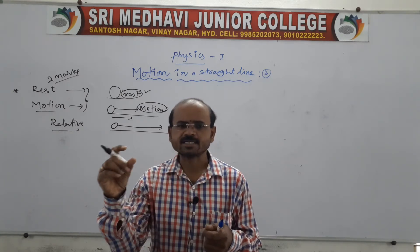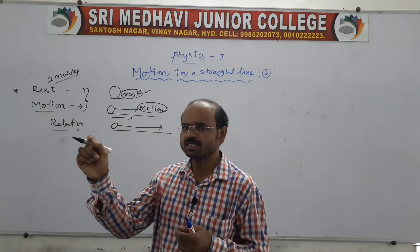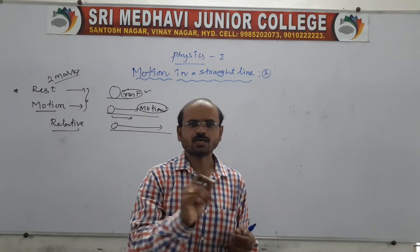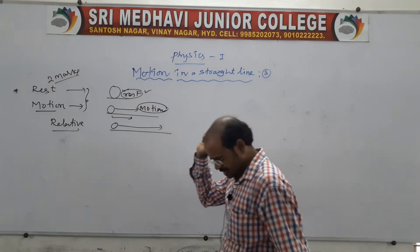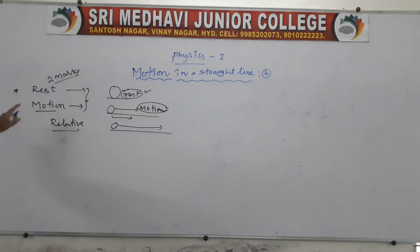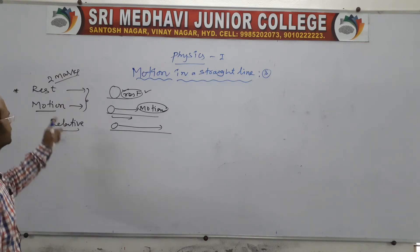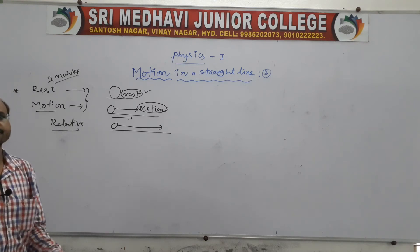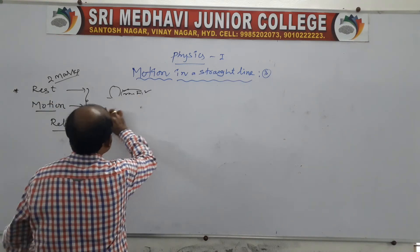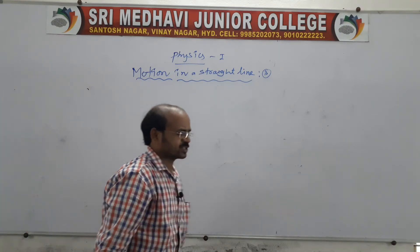So, the particle changes position with respect to time, and if a line joining all those positions is a straight line, that is motion in a straight line. Rest and motion is a two-mark question — rest means position does not change, motion means position changes with respect to time, and that is why they are called relative.